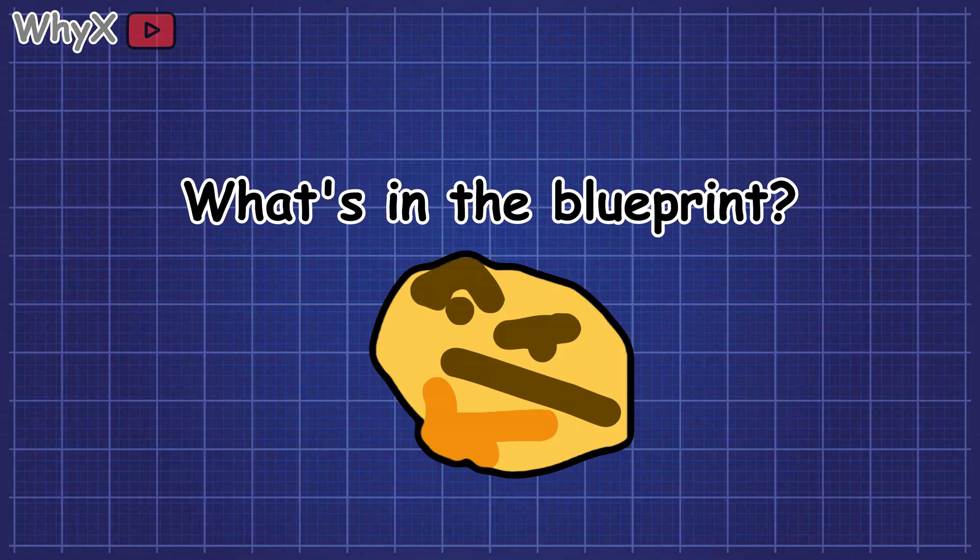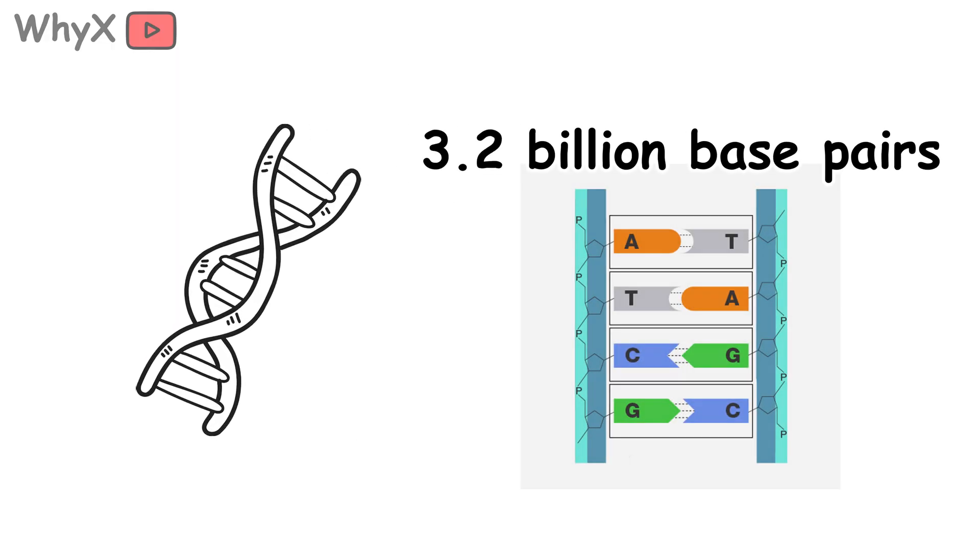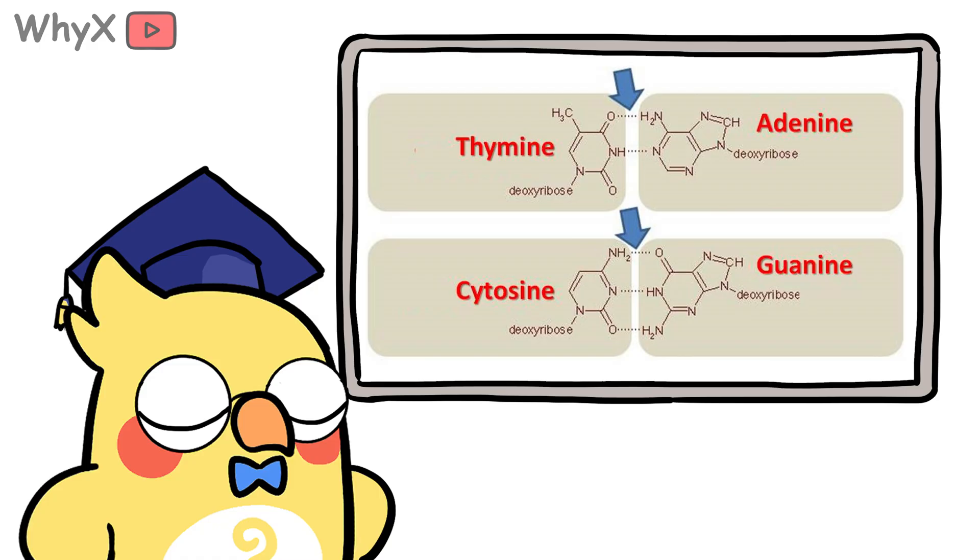So what's in that blueprint? The human genome has about 3.2 billion base pairs, that's A, T, C, and G, the four chemical letters. Strung together, they form instructions for building proteins, regulating cells, and basically running the show.